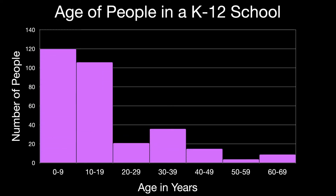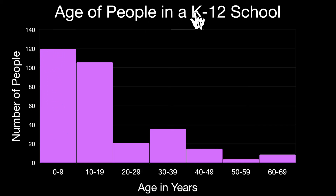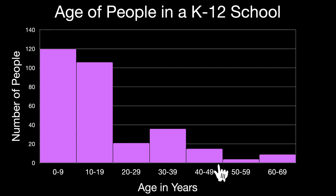Last but not least, we have a histogram. Looking at the x-axis, these are little bins, classes, or ranges of ages. For example, for zero to nine years old, there are roughly 120 people in this K-12 school somewhere between zero and nine years old — this is a range of values, or a bin, or a class. Do not confuse a histogram with a bar graph. A histogram will always have these ranges or bins or classes, where one interval ends and another begins. That is why the bars on a histogram border and touch each other, which is different from a bar graph that separates the bars because it shows categorical data instead of intervals and ranges.